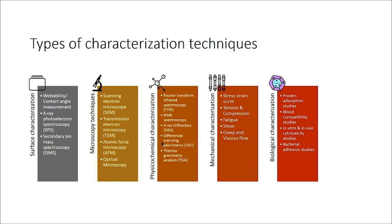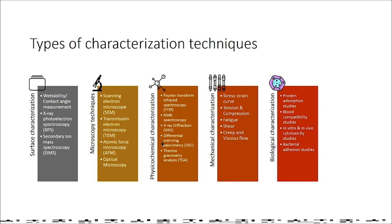Optical microscopy includes a variety of techniques such as phase contrast, fluorescent microscope, and confocal microscope. Physicochemical characterization involves FTIR, which characterizes the functional groups present on the materials. NMR spectroscopy identifies the bonding and elements present on the materials. X-ray diffraction tells whether the polymer is amorphous, crystalline, or semi-crystalline. DSC and TGA analysis are thermal property characterization techniques where you find out the melting point, degradation temperature, and glass transition temperature.